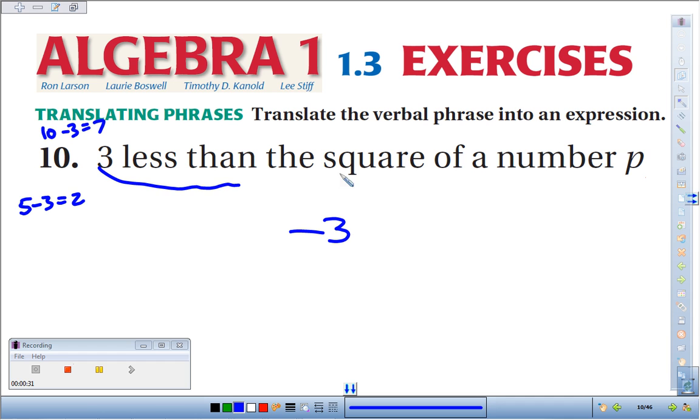Well, what are we subtracting 3 from? We're subtracting 3 from the square of a number p. So here's some number p. The square of it would be p squared. So this would be our translation.